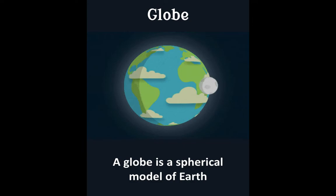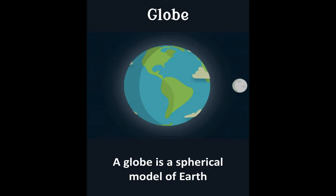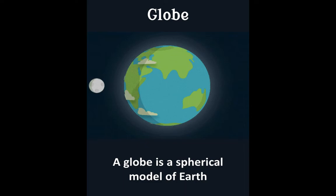This is Earth. Well, it's not actually Earth. This is a globe. A globe is a spherical model of the Earth. Today, we're going to be talking about what a globe is and the parts of a globe, and how to use a globe to find our way around.